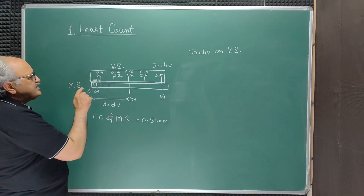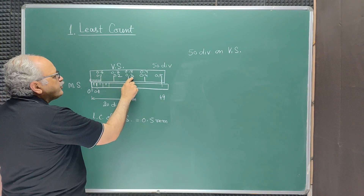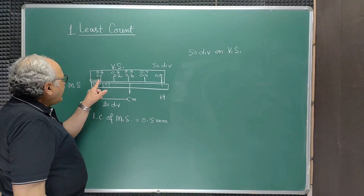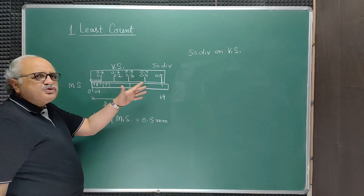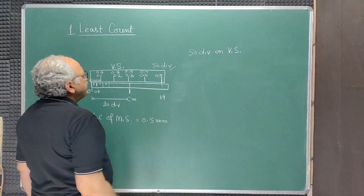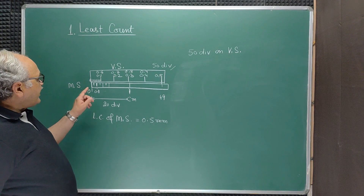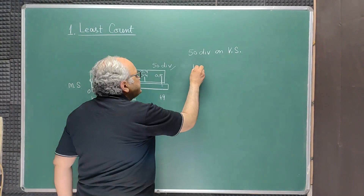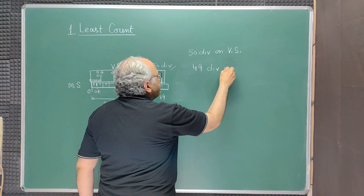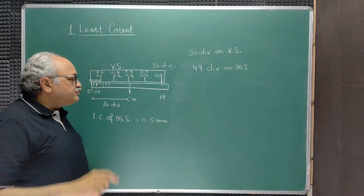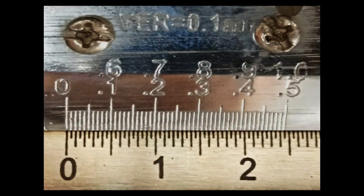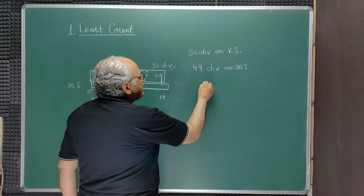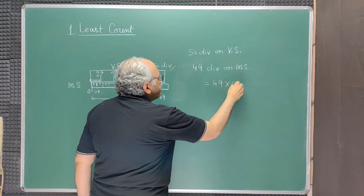This makes the least count of the main scale 0.5 mm. On the vernier scale, you will notice it is marked as 0.1, 0.2, 0.3, 0.4, and 0.5, with 10 divisions between each marking, so in total there are 50 divisions on the vernier scale. The last division of the vernier scale coincides with the 49th division on the main scale, counting the smaller divisions too, which means 50 vernier divisions equal 49 multiplied by 0.5 mm.